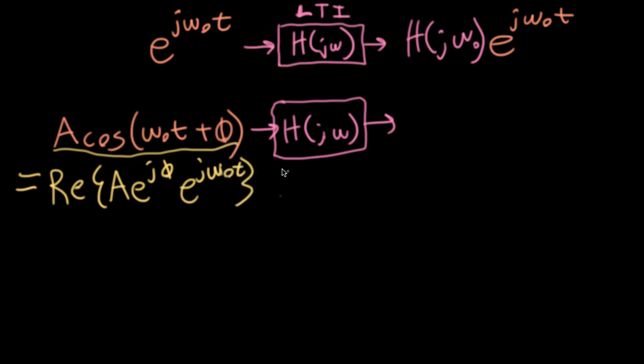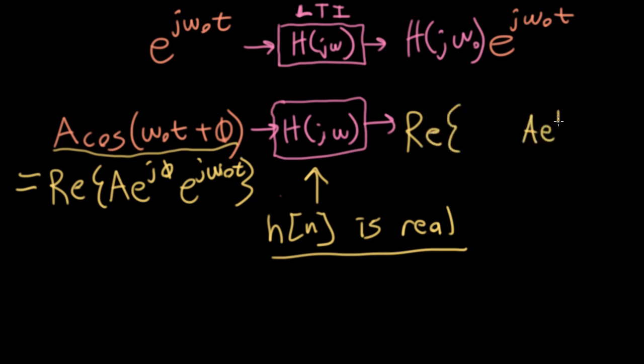And this will allow me to figure out the output fairly simply, assuming the impulse response H of n is real valued. I'm going to write the output as the real part of the input, this A multiplied by e to the j phi e to the j omega naught t, times where what's inside of the real part is multiplied by big H j omega naught.